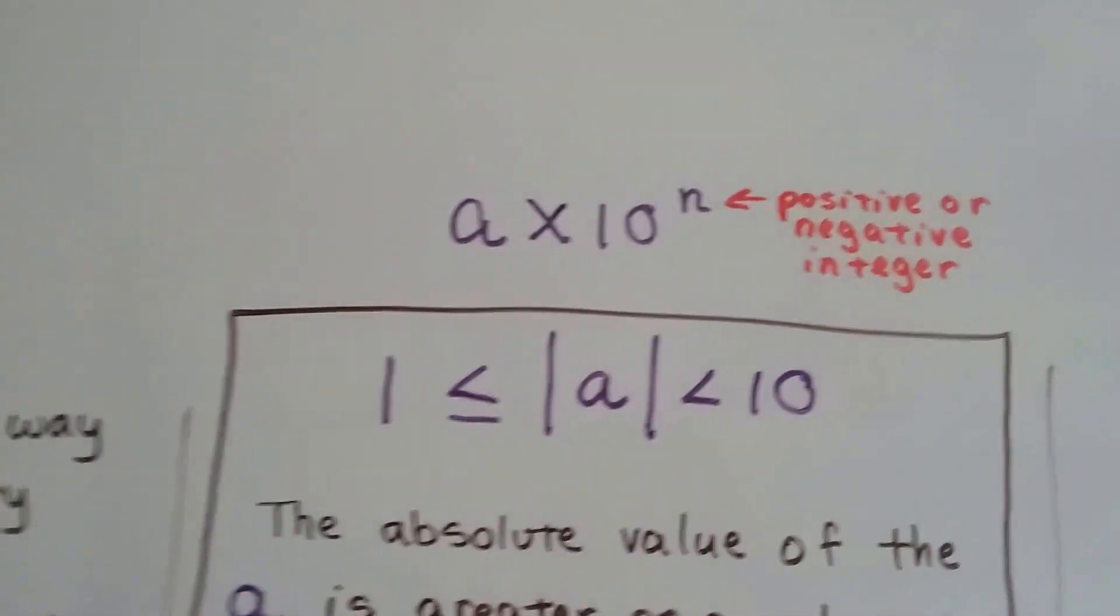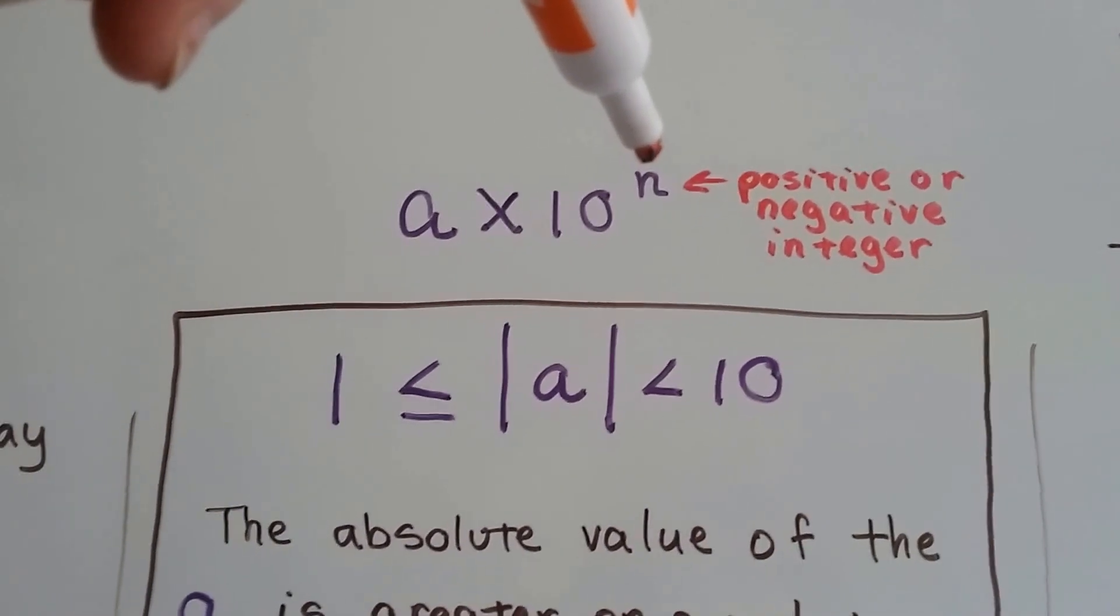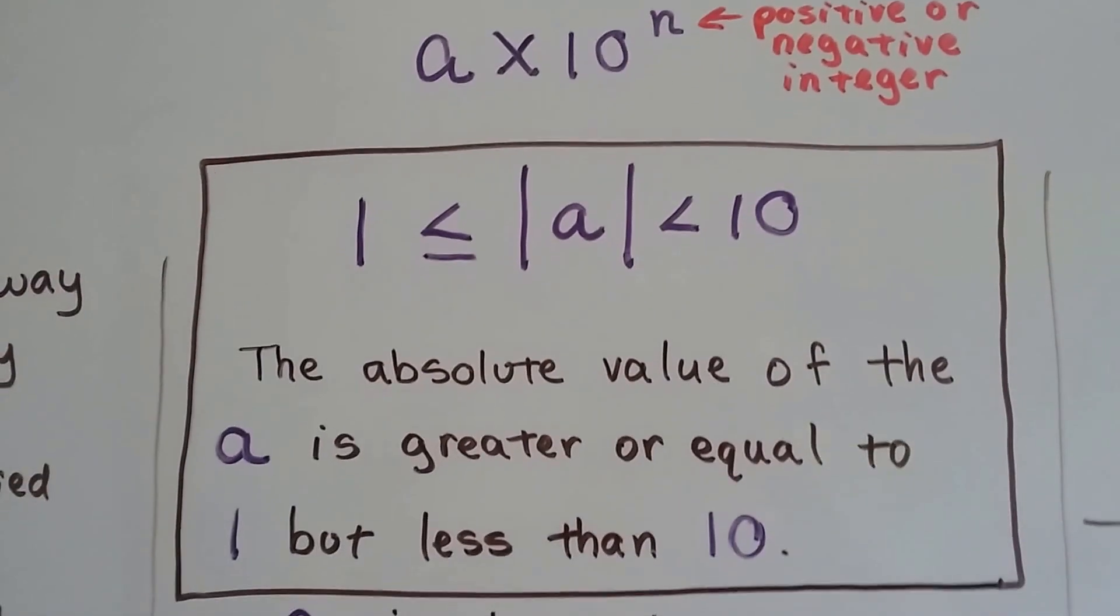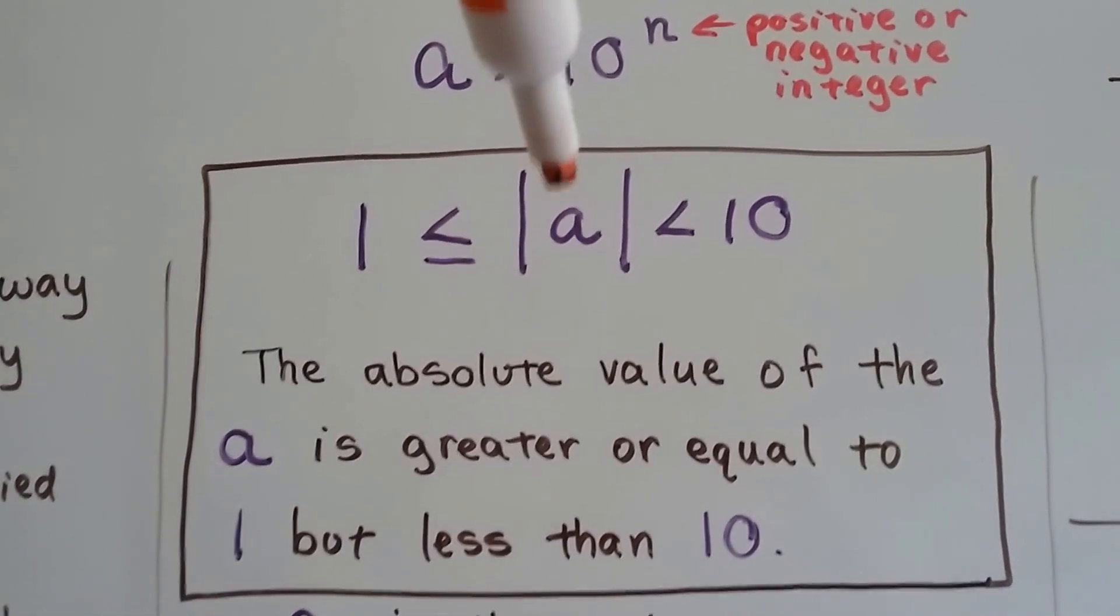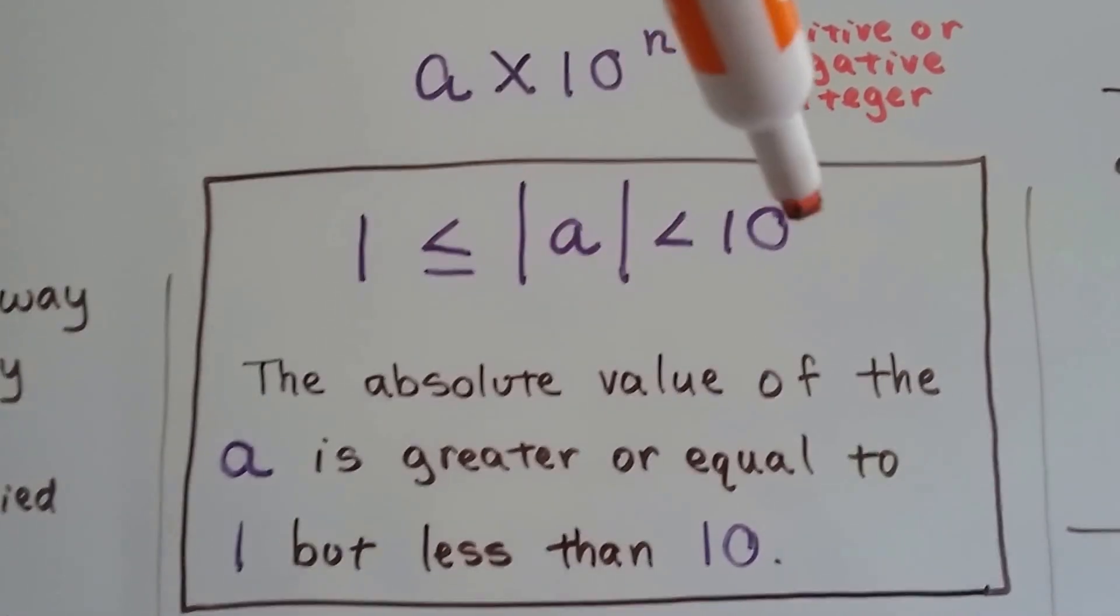Here we've got this number times 10 to a power, and that power can be a positive or negative integer. That number, it's an absolute value, and it's greater than or equal to 1, or it's less than 10.